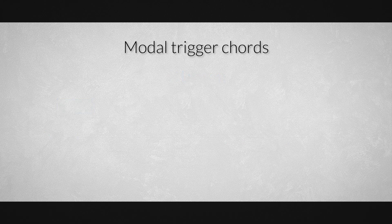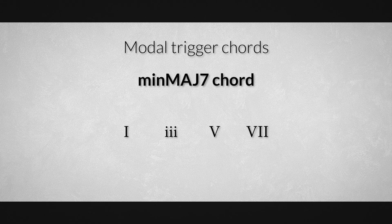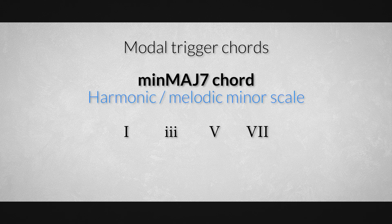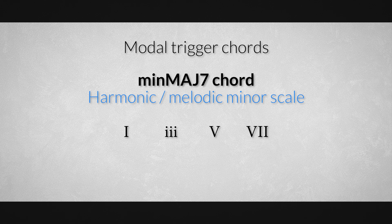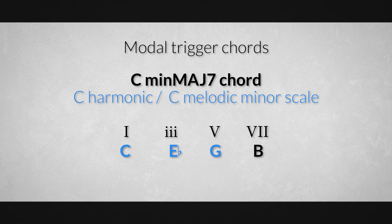A last example is the minor major seventh chord. This is a beautiful and also a little bit strange chord — not specific for a mode, but specific for the harmonic and melodic minor scale. Playing a C minor major seventh chord containing the notes C, E flat, G, and the major seventh B outlines the harmonic and the melodic minor scale perfectly.